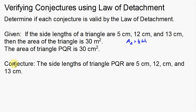The conjecture — this is what we're determining if it's valid — is that the side lengths of triangle PQR are 5 centimeters, 12 centimeters, and 13 centimeters. We've got to see if that's valid. Is that a valid conjecture? Is that a valid conclusion?